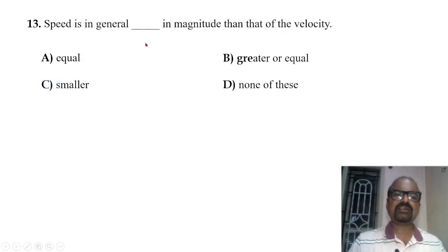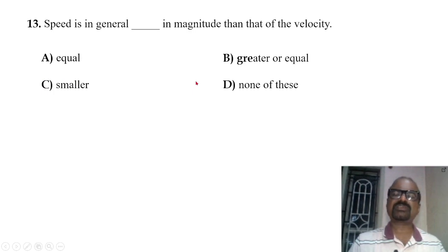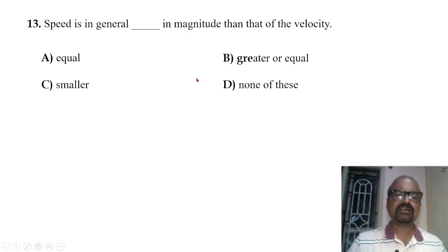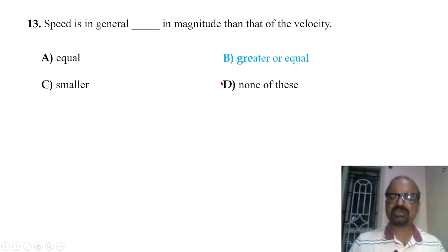Speed is, in general, greater than or equal to the magnitude of velocity. The speed equals the magnitude of velocity for straight-line motion, and speed is greater for curved-line motion.